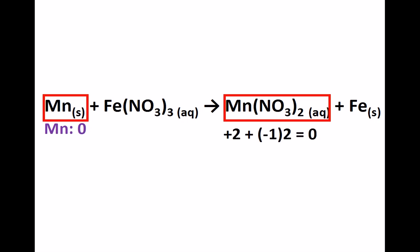So manganese changes from an oxidation number of zero to positive two, and iron changes from an oxidation number of positive three to zero. Keeping in mind that the oxidized atom will be more positive on the right-hand side of the reaction, we see that manganese has been oxidized and answer choice A is the correct answer.